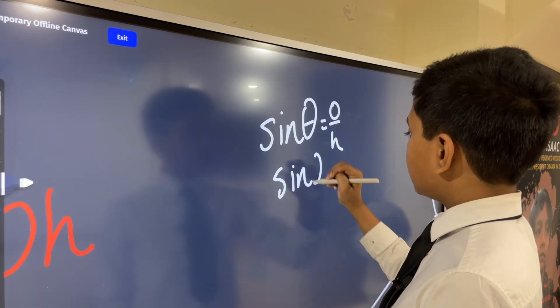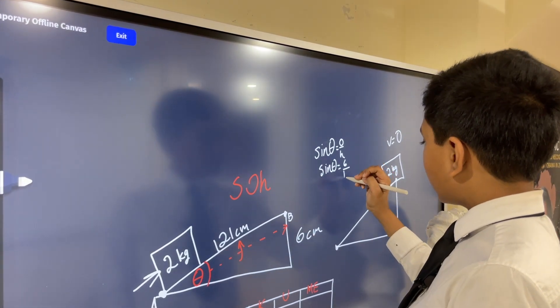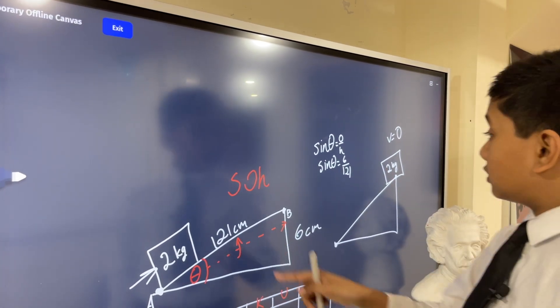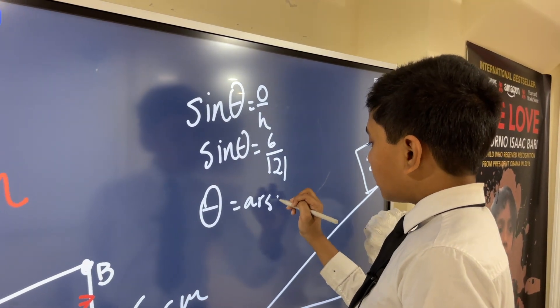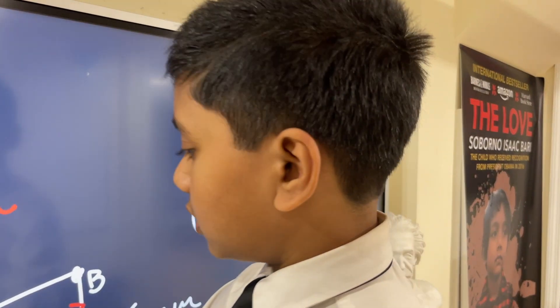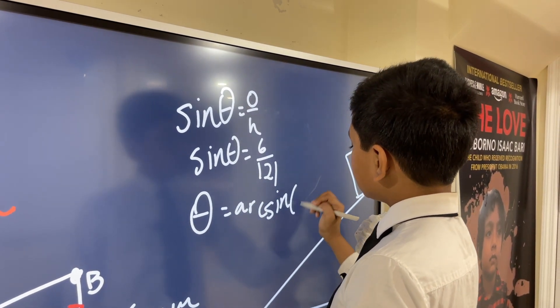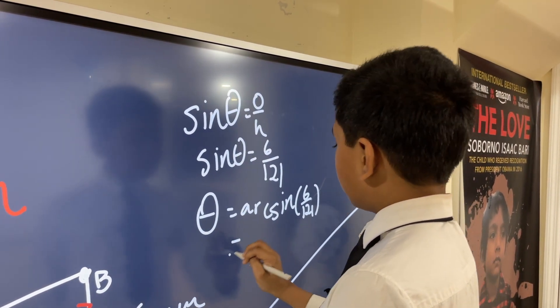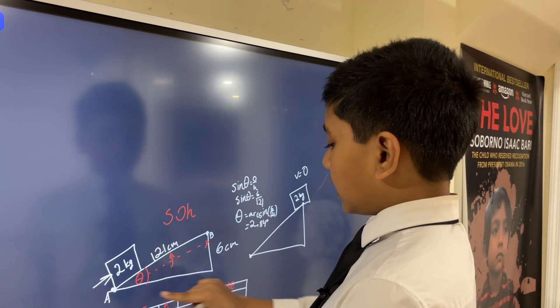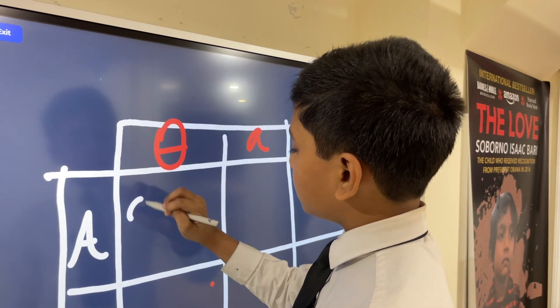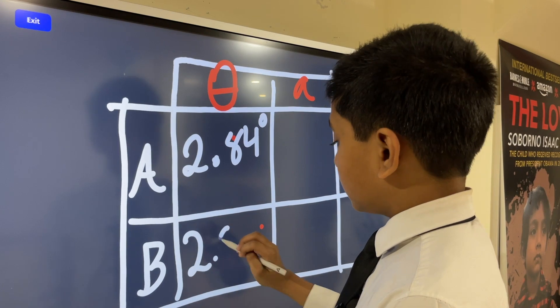Sine theta is going to be 6, because that's opposite, over 121, because that's the hypotenuse. That means theta is equal to arc sine of 6 over 121, which is about 2.84 degrees. Now we can just put that in our table: 2.84 degrees, 2.84 degrees.